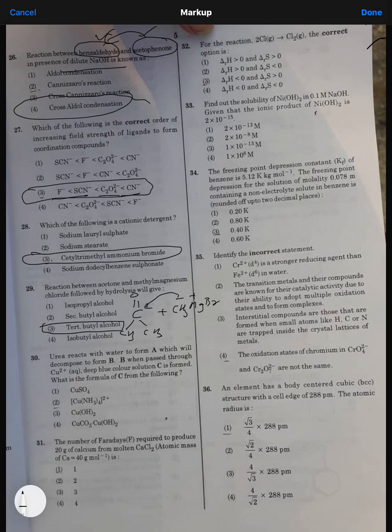Urea reacts with water to form A which decomposes to form B. So B will be ammonia. When we pass this ammonia through copper, it gives blue color, which is obviously the copper tetramine complex. Correct answer is 2.